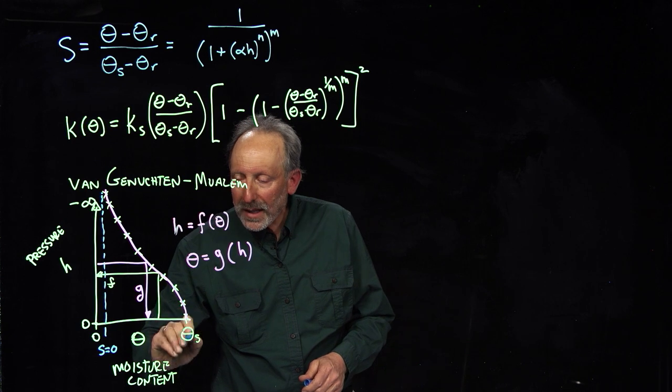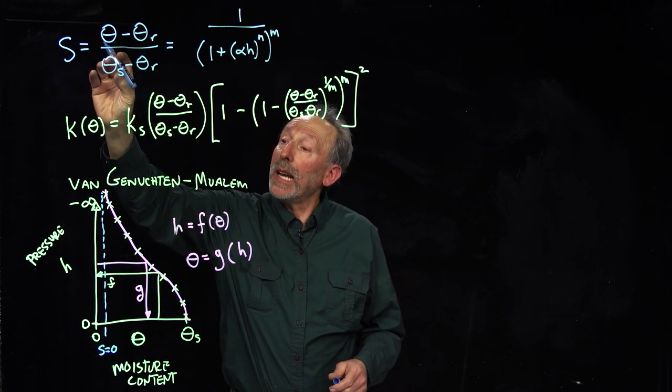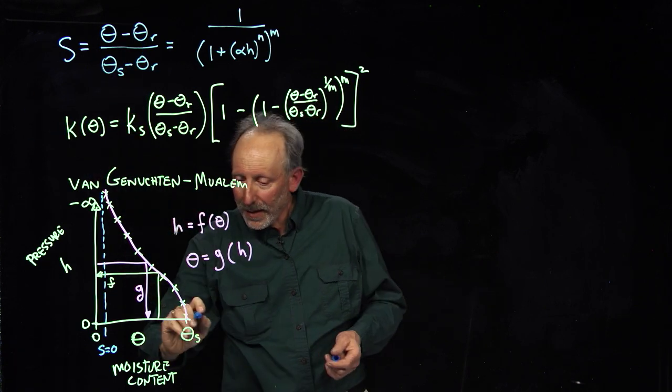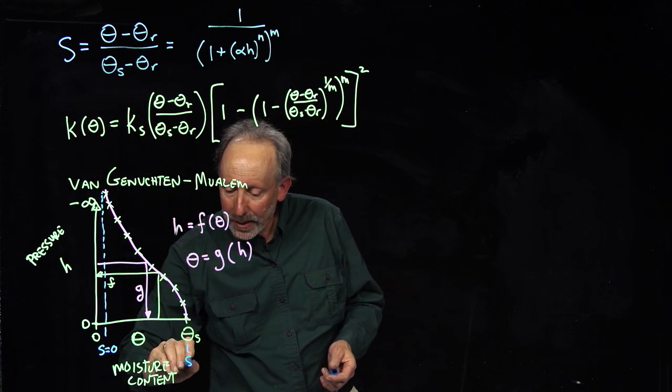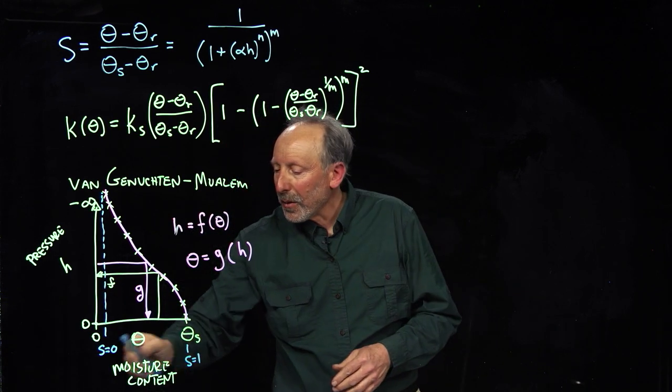And then, when we get to theta sat, we have theta sat minus theta residual divided by theta sat over theta residual. That's just equal to one. So, here, S is equal to one. So, our degree of saturation moves from zero to one.